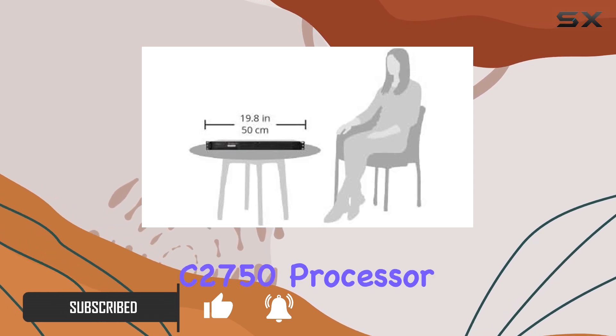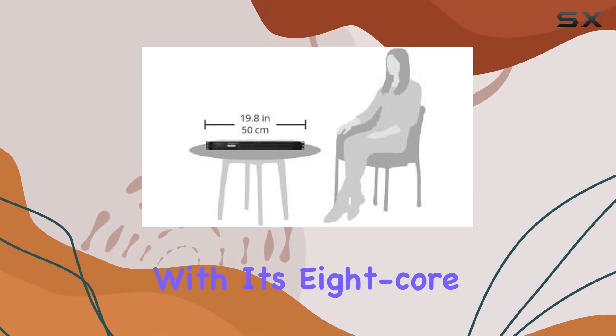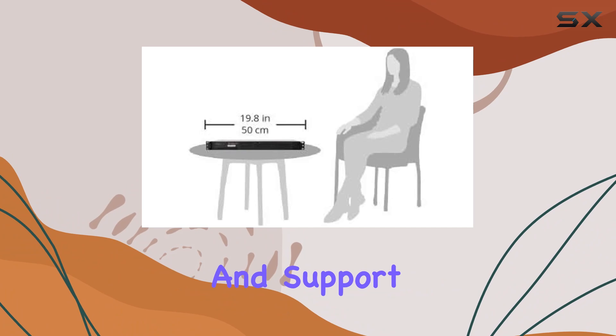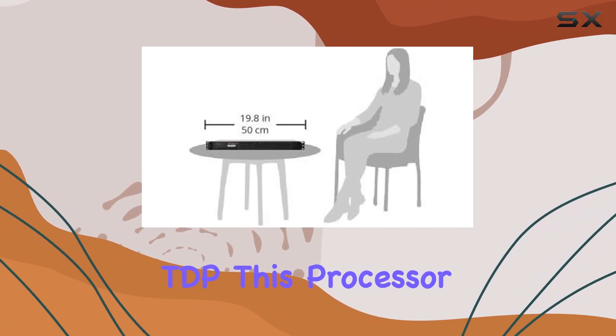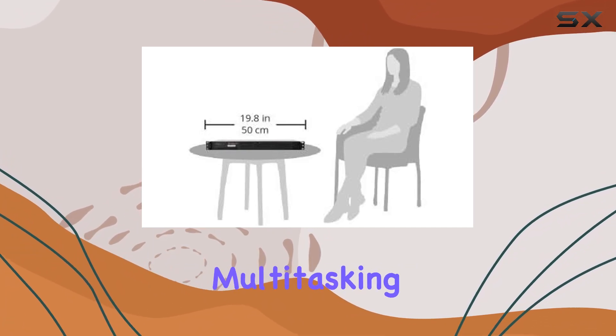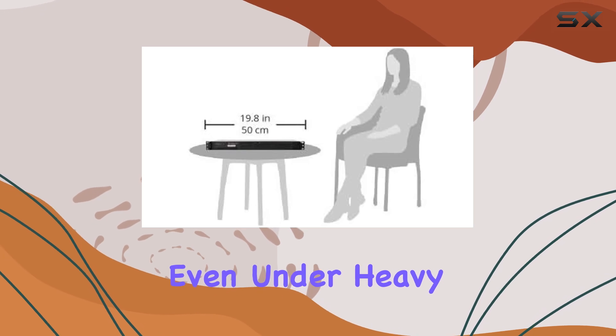Let's start with the heart of the system, the Intel Atom C2750 processor. With its 8-core configuration and support for up to 20W TDP, this processor ensures smooth multitasking and responsiveness, even under heavy workloads.